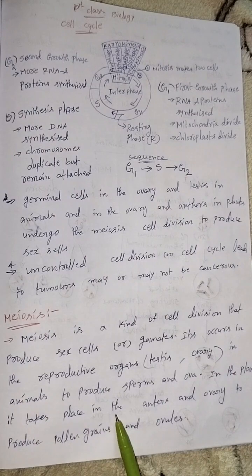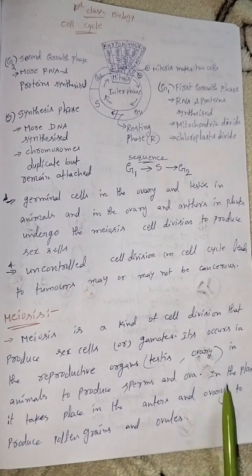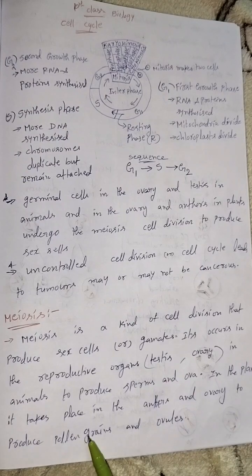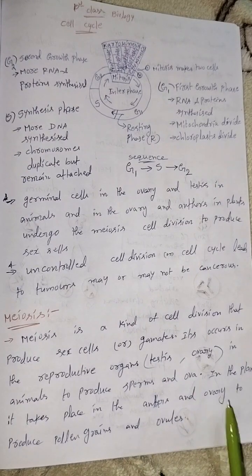In plants it takes place in the anthers and ovary to produce pollen grains in the anthers and ovules in ovary.